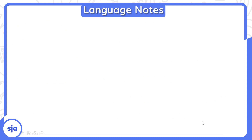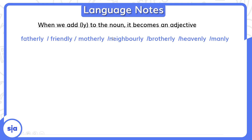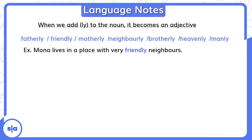Now, when we add -ly to a noun, it becomes an adjective. يعني لو زودت للاسم ly بيبقى adjective — صفة. مثلاً: father is a noun — fatherly يعني أبوي. friend → friendly. mother → motherly. neighbor → neighborly. brother → brotherly. heaven → heavenly. man → manly.